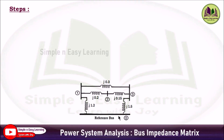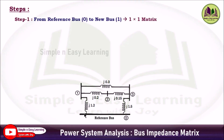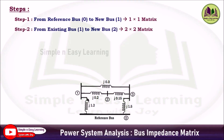Step 1: from the reference bus to bus 1. Bus 1 is a new bus — first time we are considering this bus, so we call it a new bus. We are considering the reactance j1.2, so the matrix is of order 1×1.